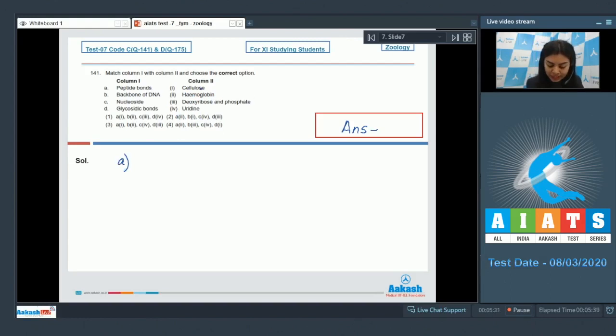would be present in the globin part of hemoglobin. Hemoglobin is made up of two parts: heme and globin, and this would constitute peptide bonds. Thus A goes with 2. B, backbone of DNA...